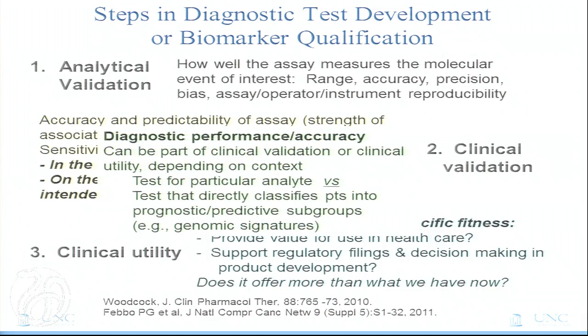There's an idea of diagnostic performance and accuracy that, depending on the test, could be part of clinical validation, or it could be part of clinical utility. For example, a test for an analyte like serum potassium — how well it detects serum potassium — would be part of clinical validation. A complex genomic test that has an algorithm giving a final result directly linked to, for example, treatment outcome with a particular drug in a patient population may, in fact, be part of the demonstration of clinical utility.